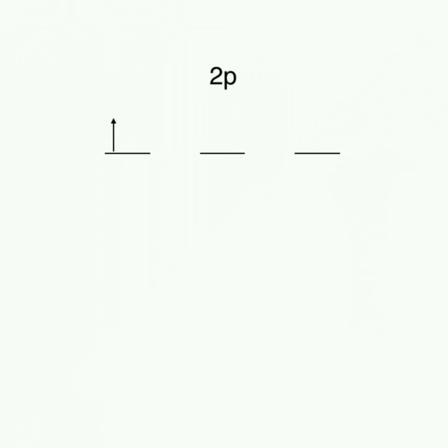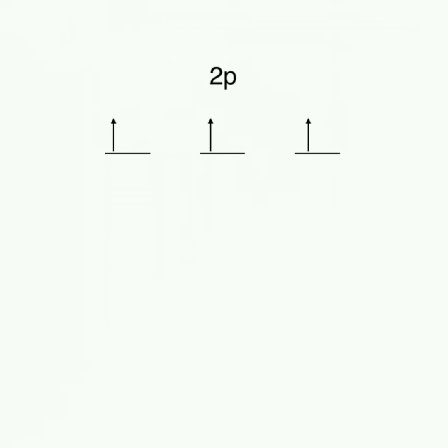Let's see what this looks like. If we have an empty 2p subshell, electrons will begin by singly occupying each orbital. These three electrons will have their spin in the same direction. It doesn't make a difference whether all the spins are up or down, but the general notation is to draw upward spins first. Once each orbital has one electron, orbitals will then get filled with second electrons.